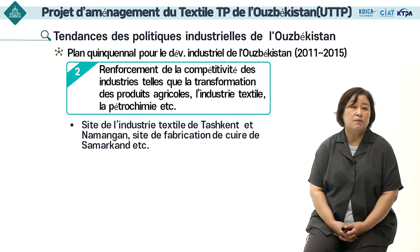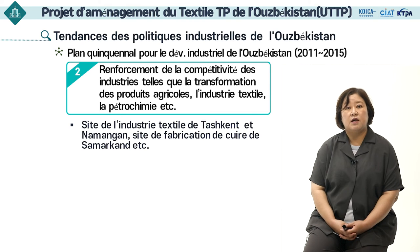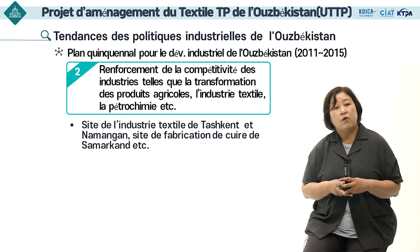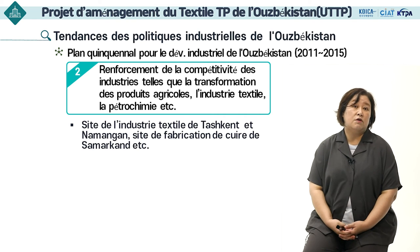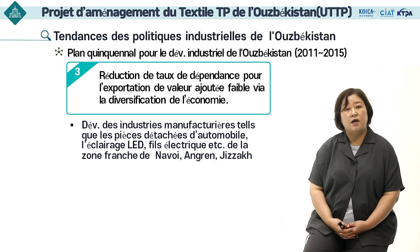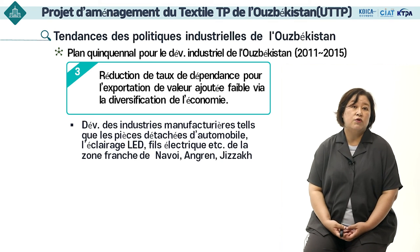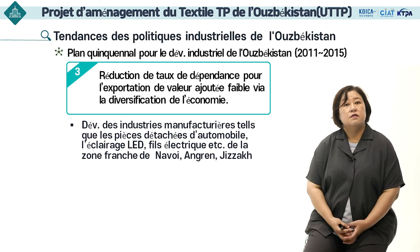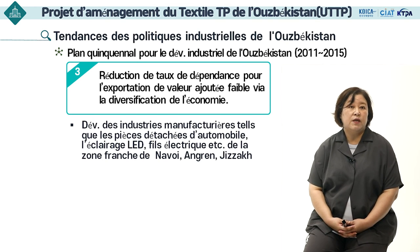Des efforts ont été déployés afin de renforcer la compétitivité des industries telles que la transformation des produits agricoles, le textile et la pétrochimie. Des complexes de textiles ont été construits à Tashkent et à Namangan. Ayant le but de renforcer la compétitivité de diverses industries, un complexe de transformation du cuir à Samarkand a également été établi. Il y a eu l'objectif de réduire la dépendance aux exportations à faible valeur ajoutée, avec des tentatives pour augmenter la part des exportations vers les industries à haute valeur ajoutée, notamment dans les zones économiques de Navoy, Angren et Tizak.